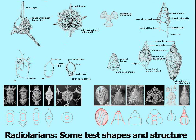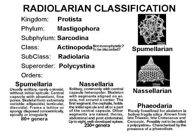As this slide demonstrates, the geometry of radiolarian tests is extremely diverse, but until 1981 were classed into only three orders: Spumellaria, Nassellaria, and Phaeodaria.